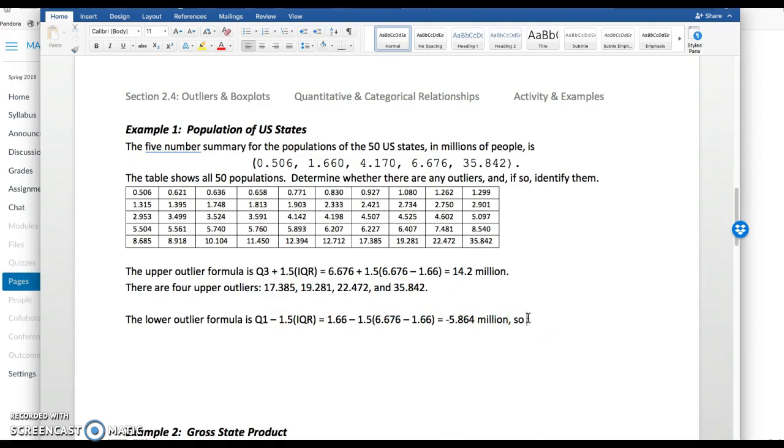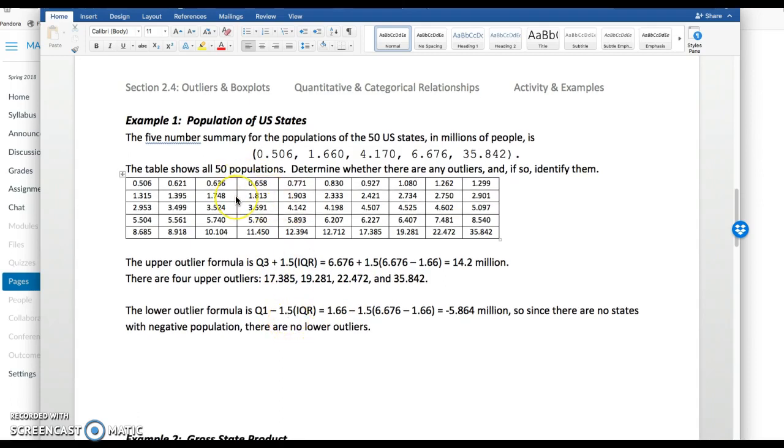Since there are no states with negative population, the smallest data point is 0.5 or half a million, there are no lower outliers. So in total, we just have the four upper outliers for this problem.